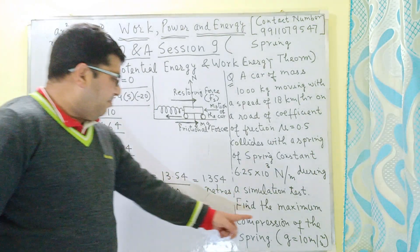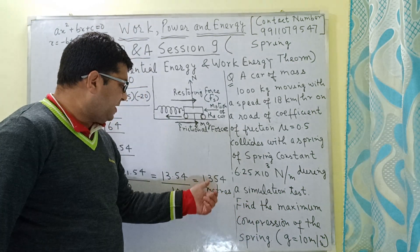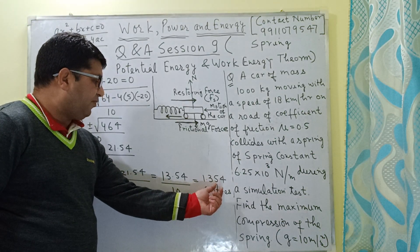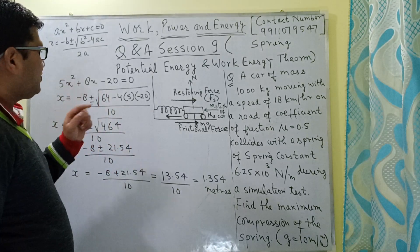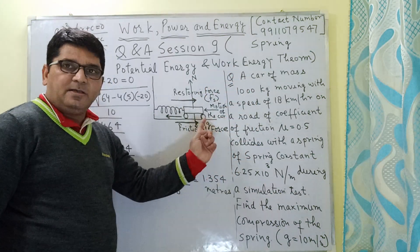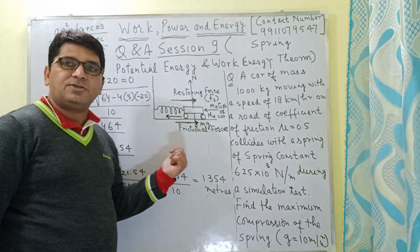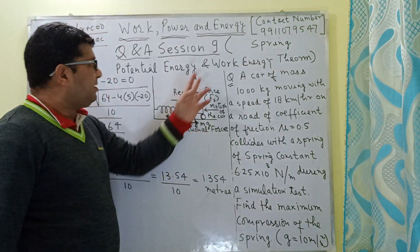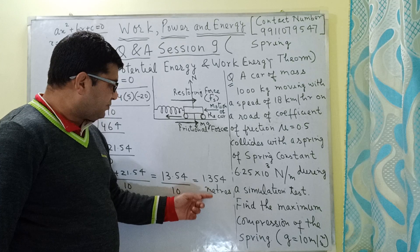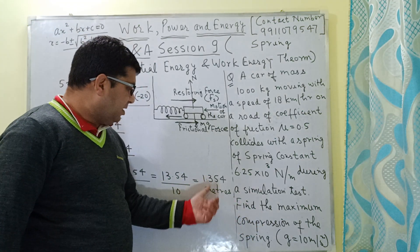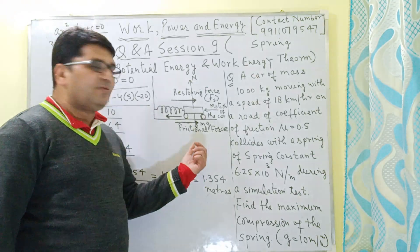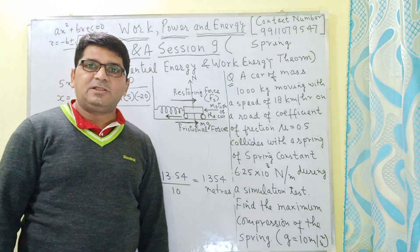So the maximum compression of the spring is 1.354 meters — the spring will be compressed up to a length of 1.354 meters. The most important concept used here was the Work-Energy Theorem: the change in kinetic energy equals the net work done on the body. Using this theorem we were able to solve the question very easily. Thank you for joining this session. In the next session I will come up with a different question from the same topic. Have a nice day, bye.